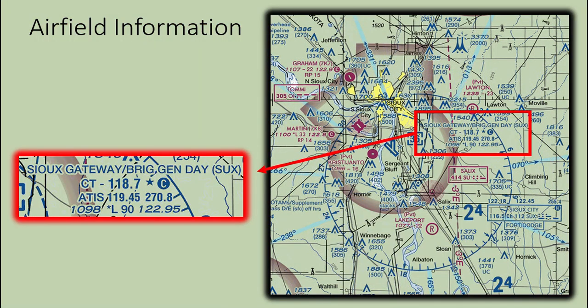Now let's look at Sioux City, Iowa's Class D airfield. The frequency of Sioux Gateway's control tower is 118.7, but when the tower is closed it reverts to an uncontrolled Class E airfield and 118.7 becomes the common traffic advisory frequency. ATIS is broadcast over VHF and UHF. The field elevation is 1,098 feet MSL. The airfield has lighting for night operations and the longest runway is 9,000 feet.